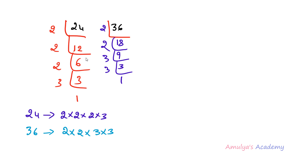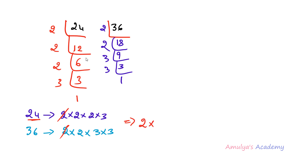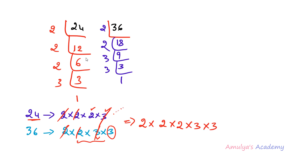Next we need to see whether both numbers contain the same factor. For example, 24 contains 2 and 36 also contains 2, so I take a single 2. If both numbers contain the same prime factor, I take only one. Again both contain 2 so I take one 2. 24 has another 2 but 36 does not, so I take it as is. Both contain 3 so I take a single 3. 36 has another 3 and 24 does not, so I take it as is. Multiplying: 2 × 2 × 2 × 3 × 3 = 72. This is the LCM of these two numbers.